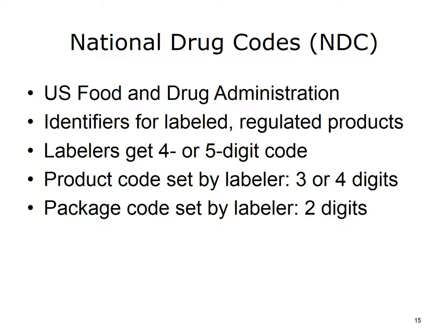Codes may be reused and are limited in representation of drugs. The code for aspirin with codeine is 54868-0385. The listing includes dosage form, routes of administration, active ingredients, strength, and units. NDC codes are used for reimbursement.